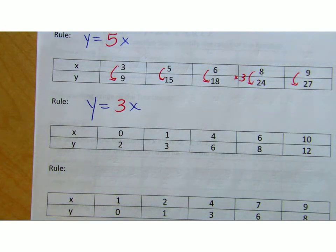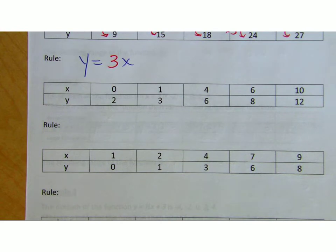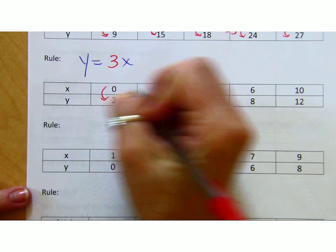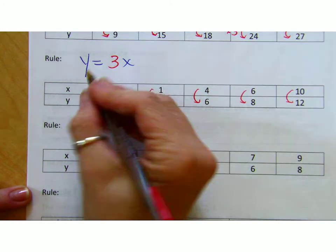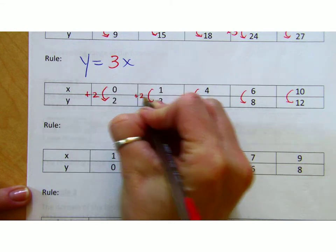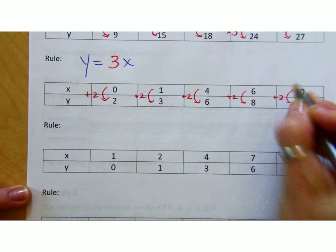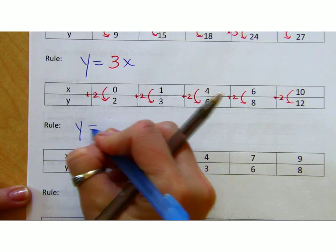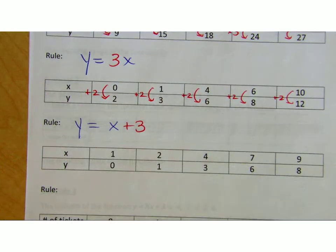Now, if you're looking at this next one trying to figure out what got multiplied, you're going to be looking a long time. Because nothing got multiplied, but something did get what? Added, right? So what do you got, Jordan? Y equals x plus 2. Good. So he looked and said, well, there's no nothing getting multiplied, but if I do add 2 to each of these x values, I'll get the y values, right? So in this case, y is equal to not anything in front of the x because nothing got multiplied, something got added.